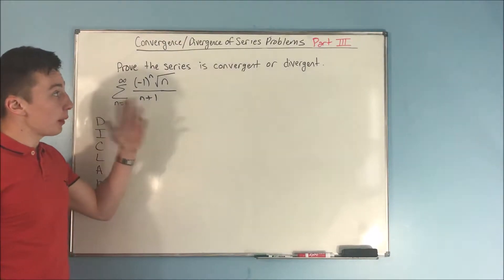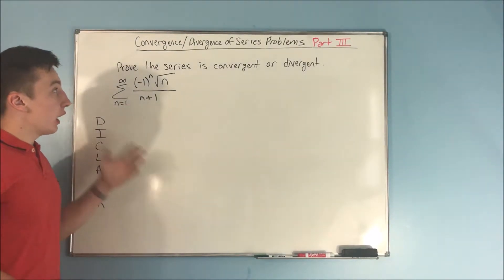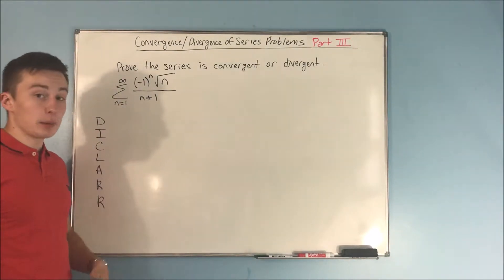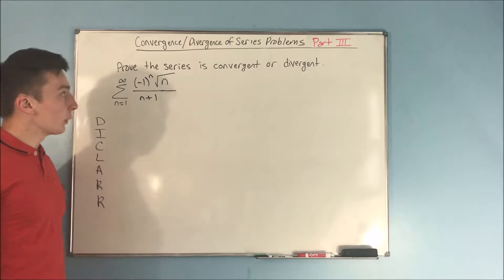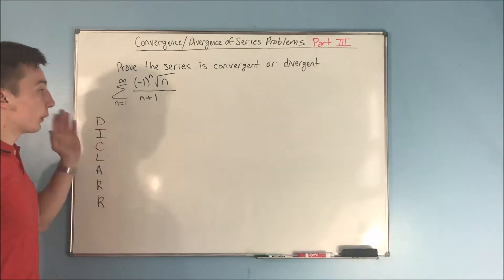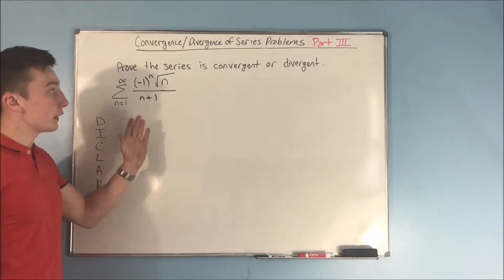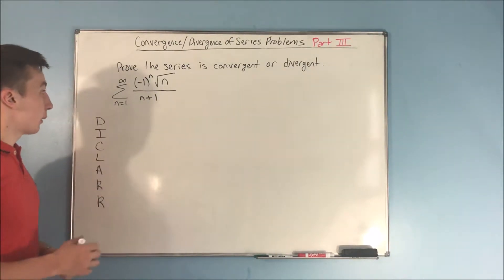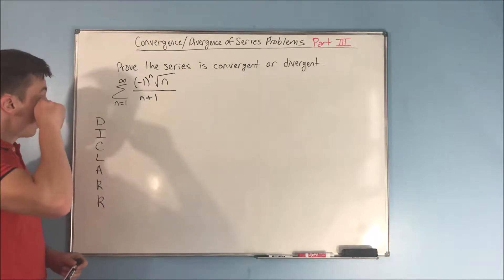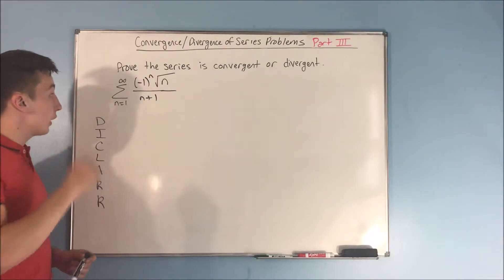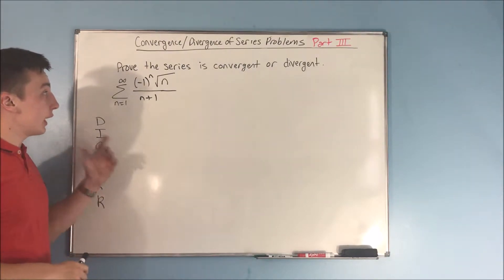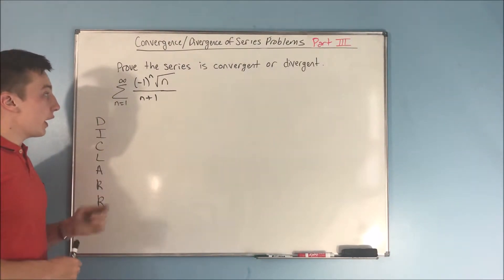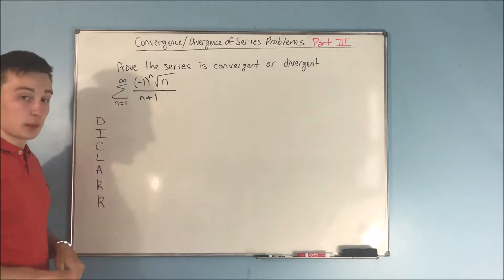This video is going to be part three of our convergence and divergence problems with series. We want to prove that this series is convergent or divergent. We have our sum from n equals one to infinity of negative one to the n times the square root of n over n plus one.